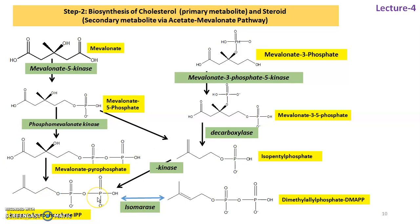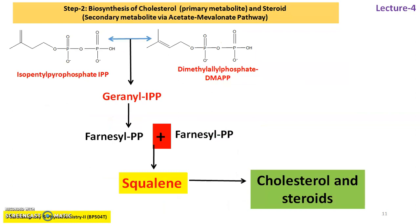This isopentyl pyrophosphate, in the presence of isomerase enzyme, yields dimethylallyl pyrophosphate. When two molecules — isopentyl pyrophosphate and dimethylallyl pyrophosphate — react, they give geranyl pyrophosphate, which further reacts with another IPP molecule to give farnesyl pyrophosphate. In plant cells, farnesyl pyrophosphate reacts with another molecule of farnesyl pyrophosphate to give squalene, and this squalene leads to production of cholesterol and steroids via the acetate mevalonate pathway.